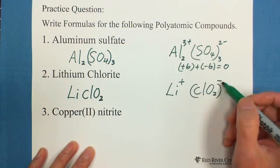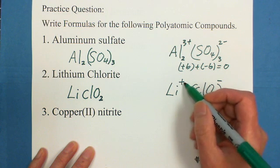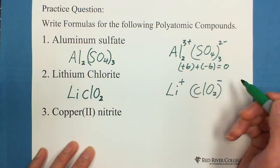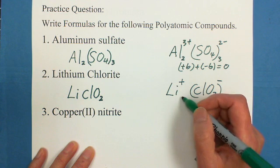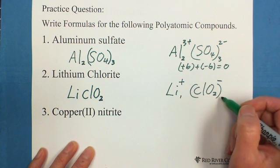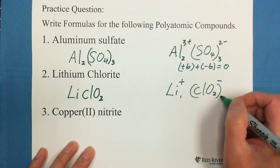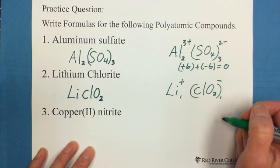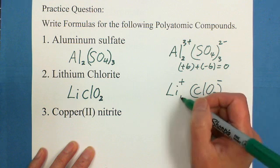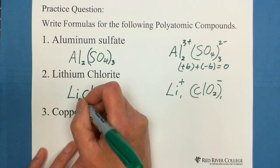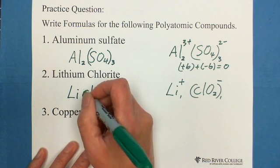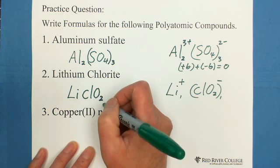In this situation, negative 1 with positive 1, they can be balanced. We don't need any subscript. It means each one is only 1 ion. So if 1 to 1, we don't need to write any subscript on the bottom. Also, we don't need to put brackets.